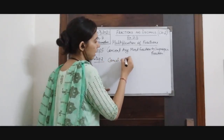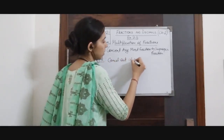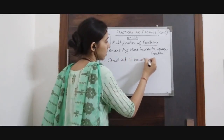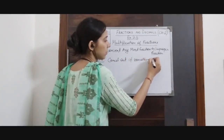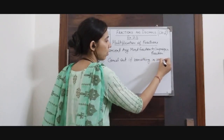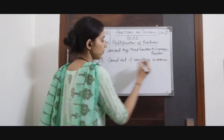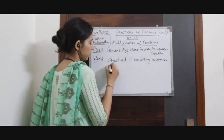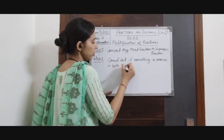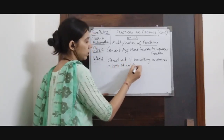Step 2 is: cancel out if something is common in both numerator and denominator.